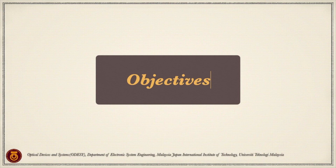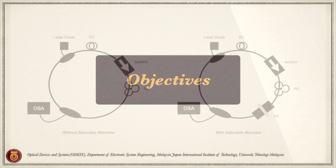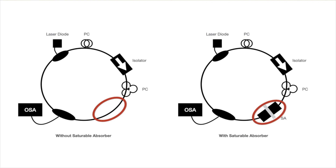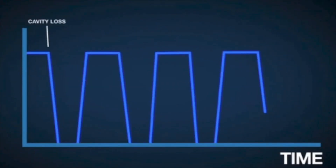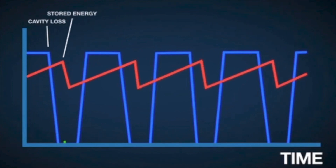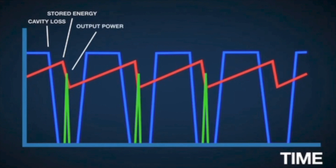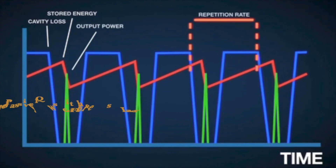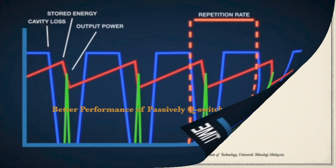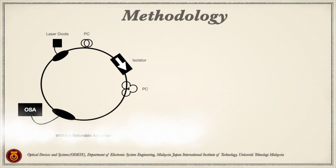The objectives of my research are to simulate the passively Q-switched fiber laser with and without using a saturable absorber, and to analyse and optimise the parameters such as repetition rates, pulse energy, pulse width and output power, which affect the Q-factor and the intra-cavity losses for better performance of the passively Q-switched fiber laser using a saturable absorber.